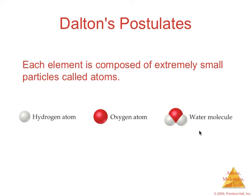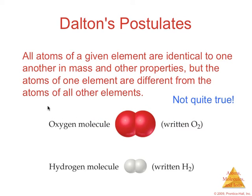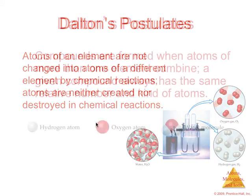So Dalton's postulates. First one, each element is composed of extremely small particles called atoms. He also went on to say that all atoms of a given element are identical to one another in mass and other properties, but the atoms of one element are different from the atoms of all other elements. Now, this is not quite true, and it really has to do with isotopes that we'll get to in a moment. But hopefully you know that atoms of oxygen are very different than atoms of hydrogen.